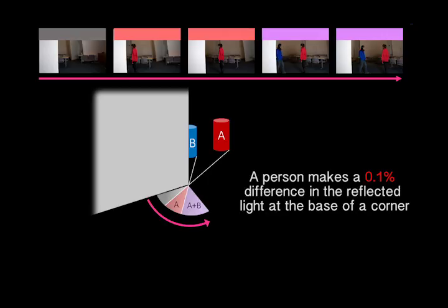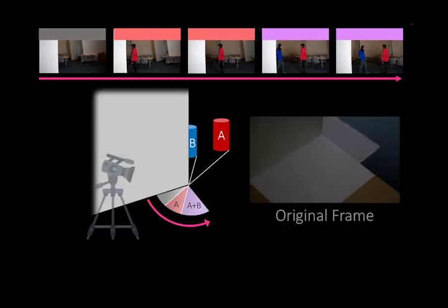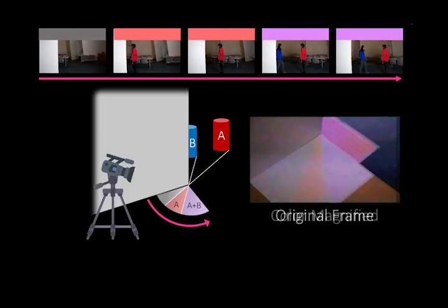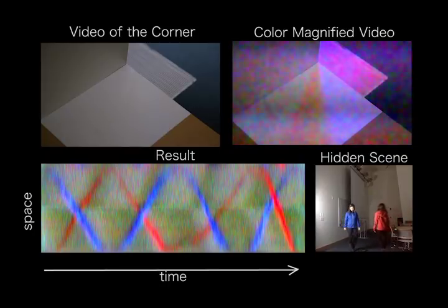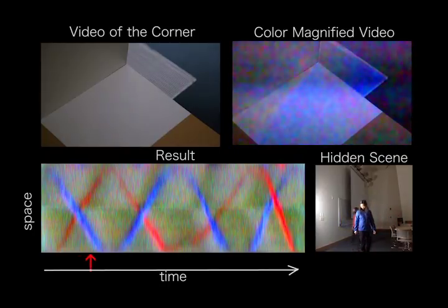These changes in the penumbra are usually invisible to the naked eye. But by recording the penumbra from afar, we are able to combine information across the video to measure these tiny changes and use them to generate a one-dimensional movie that indicates the changes in the hidden scene over time.